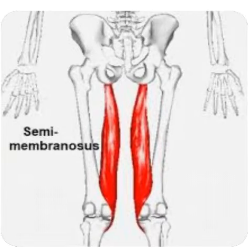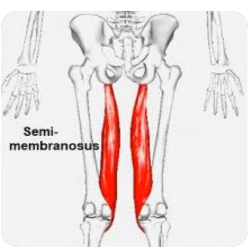Semimembranosus is one of the group of muscles called the hamstrings. It is located on the posterior medial side of the thigh, deep to semitendinosus and medial to biceps femoris.